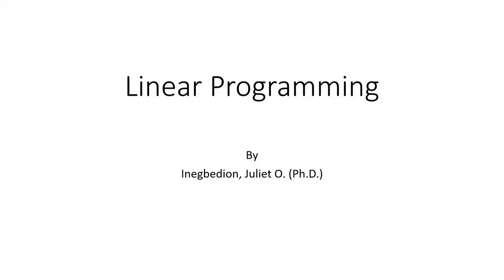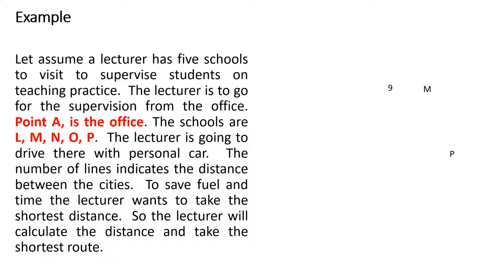Welcome. We're going to look at linear programming in this video. Let's look at an example. A lecturer has five schools to visit to supervise students on teaching practice. The lecturer is to go for supervision from the office — point A is the office. The schools are L, M, N, O, P. The lecturer is going to drive there with a personal car. The number of lines indicates the distance between the cities. To save time, the lecturer wants to take the shortest distance and will calculate the route accordingly.